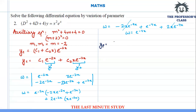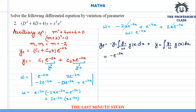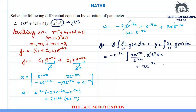Substituting into the particular solution formula: yp = y1·∫(y2/ω)·g(x) dx + y2·∫(y1/ω)·g(x) dx. With y1 = e^(-2x), y2 = x·e^(-2x), ω = e^(-4x), and g(x) = x²·e^x, substituting gives e^(-2x)·∫x·e^(-2x)/e^(-4x)·x²·e^x dx plus x·e^(-2x)·∫e^(-2x)/e^(-4x)·x²·e^x dx.